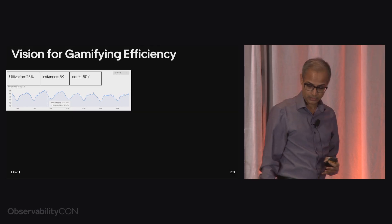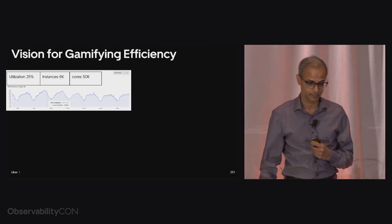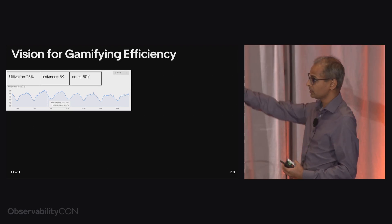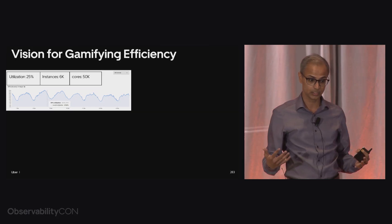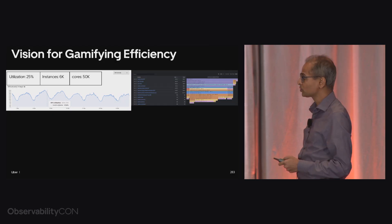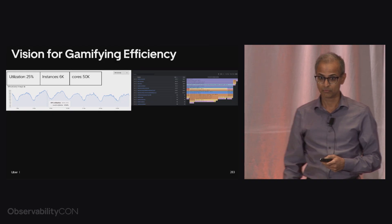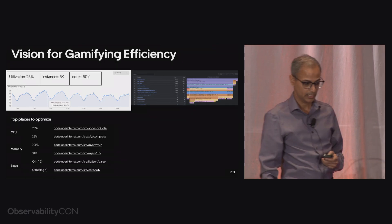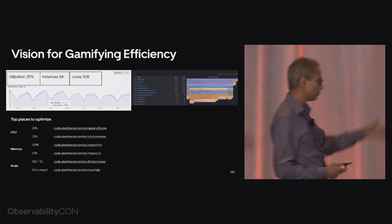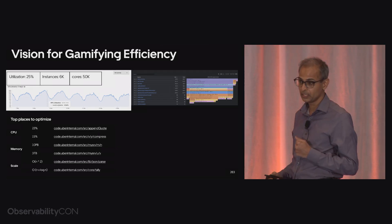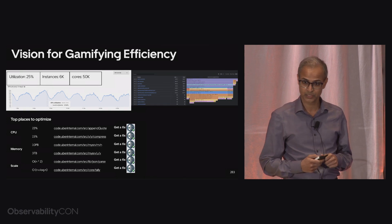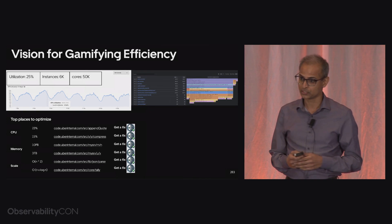Here is our vision for gamifying efficiency. Our developers are deeply involved in code writing, deploying, and observing their services — they always have access to charts showing utilization, instances, and core counts. Pyroscope will come and show flame graphs where we have hotspots, and we will show them the top places to optimize by different metrics: by CPU, by memory, by scale — whether it's algorithmically scaling well or not. And at their fingertips, they will also have a 'get a fix' button that produces automatic optimizations.